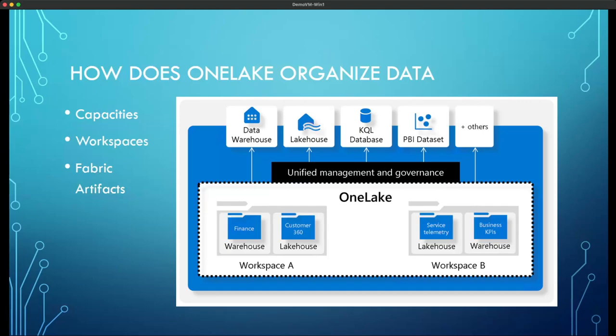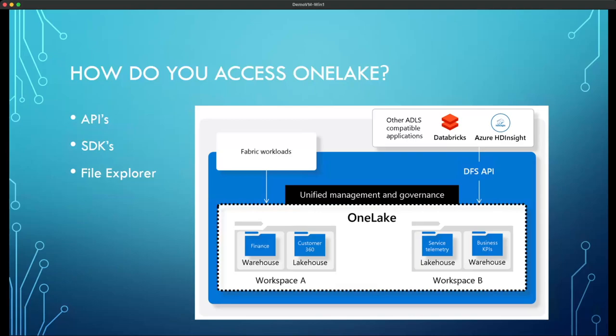By default, Fabric workloads such as warehouses and lake houses will all store their data within One Lake as delta parquet files. Data inside Microsoft One Lake is organized into workspaces — logical containers used to house your Fabric artifacts and to control ownership and access. Each workspace is tied to a Fabric capacity. Capacities are used to map your artifacts to a particular Azure region and to control your capacity limits and billing.